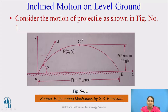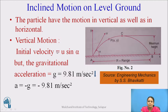Now, consider the motion of a projectile inclined. If you observe this figure, here the particle A is projected inclined with the horizontal surface with an initial velocity U. The particle has motion in both vertical and horizontal directions because it has an inclined projection. Whenever it is inclined, it will have two directions — horizontal as well as vertical — giving us two motion components.